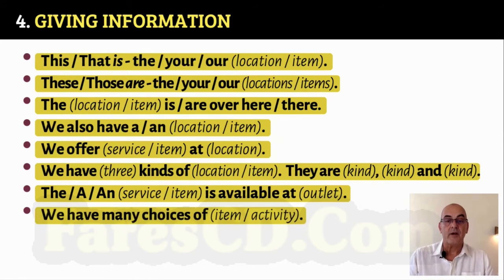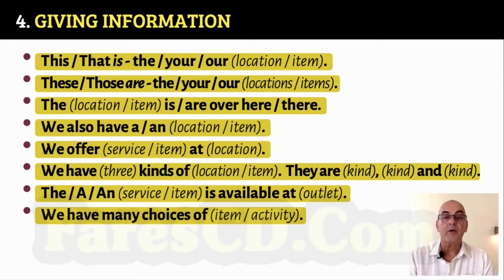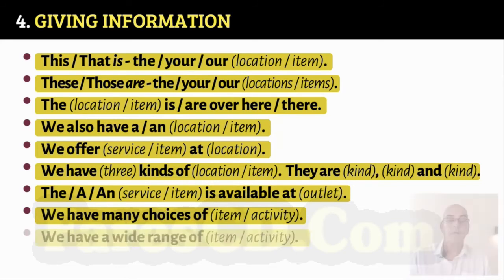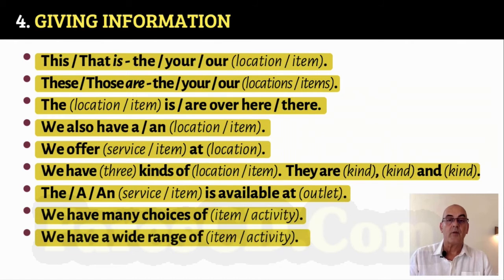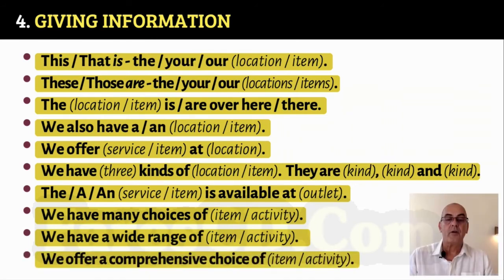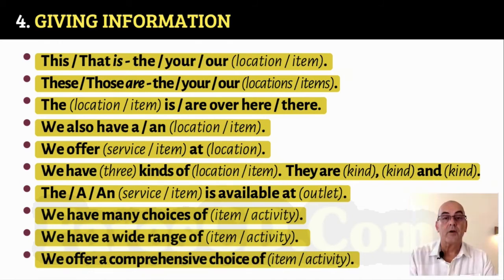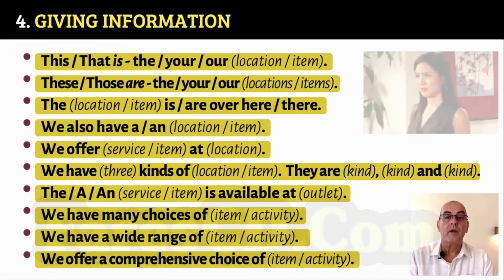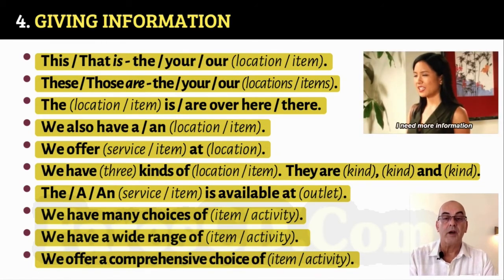We have many choices of item. We have many choices of activity. For example: We have many choices of smartphone. We have a wide range of organic vegetables. We offer a comprehensive choice of wine. You can use any combination of 'wide,' 'comprehensive,' or 'extensive' with 'choice' and 'range' — they all mean many kinds of, or a large variety.